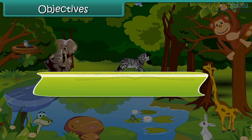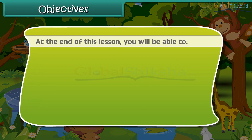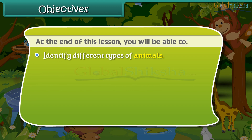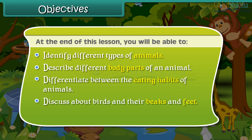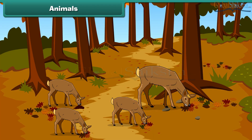Objectives. At the end of this lesson, you will be able to: identify different types of animals; describe different body parts of an animal; differentiate between the eating habits of animals; discuss about birds, their beaks and their feet; and define the food chain.